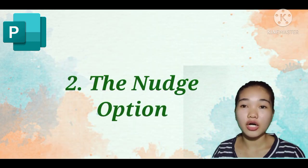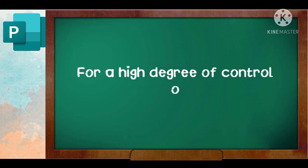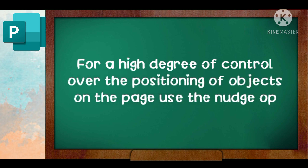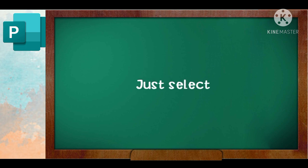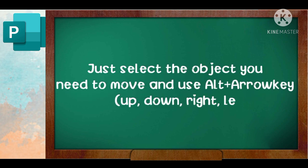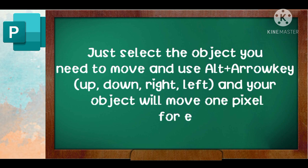Number two, the nudge option. For a high degree of control over the positioning of objects on the page, use the nudge option. Just select the object you need to move, alternate arrow keys, either up, down, left, or right, and your object will move one pixel for each keystroke.